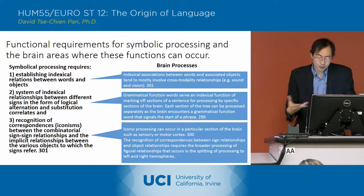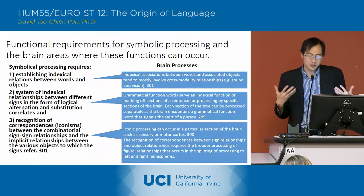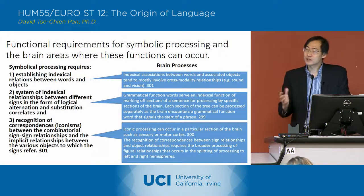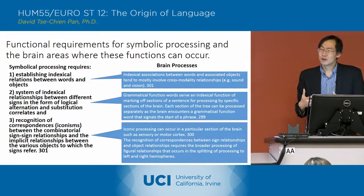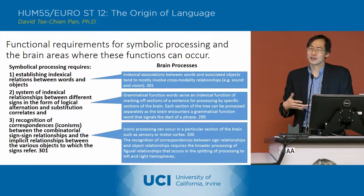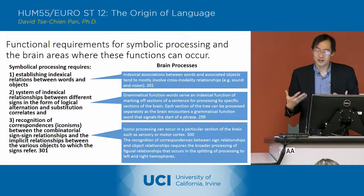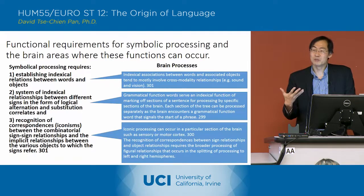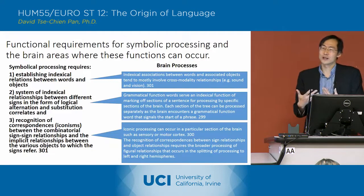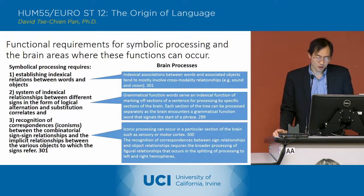Finally, he talks about iconic processing, which is processing likenesses — processing things that you recognize. There are two aspects of that. One is basically seeing one thing and recognizing it as an example of a particular class of objects — for instance, saying 'this is a man like other men.' That's a kind of iconic relationship, and he sees that as being processed within the sensory or motor cortex, where you recognize similarities between objects or recognize that one object belongs to a larger class of objects.